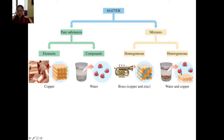A heterogeneous mixture is when you have two different types of things mixed together that are not in the same phase. The book uses the example of pennies in a cup of water. The pennies are mixed with the water, but they're very different — you would know the difference between the top of the glass where there's only water and the bottom where there are pennies. The main difference is that we have a liquid and a solid in the same mixture. When there are two different phases — liquid, solid, or gas — in a mixture, it is a heterogeneous mixture.